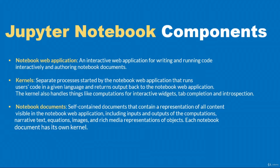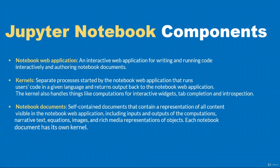The third component is the notebook document — a self-contained document that contains a representation of all the content visible inside the notebook web application, including inputs, outputs produced from the kernel, narrative text, equations, images, videos, and rich media representations. Each notebook document has its own kernel — there is a kernel for Python and kernels for other programming languages as well. In this video, I gave you a brief introduction to the various components of the Jupyter Notebook.